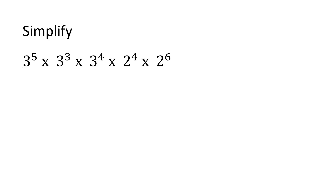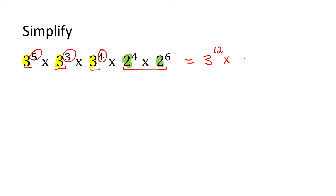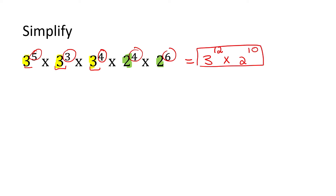Here's an interesting one, because we've got the number 3 repeated over there, but then it changes to a 2. So what do we do? All you do is keep the 3 — when the bases are the same, leave the base, add the exponents: 5 plus 3 is 8, 8 plus 4 is 12. Then just put a times, and then do this part — when the bases are the same, leave the base, and add the exponents. What's 4 plus 6? 10. There is your answer.